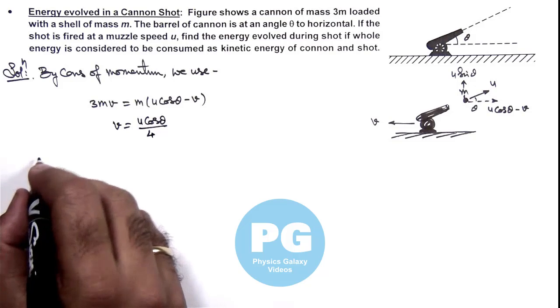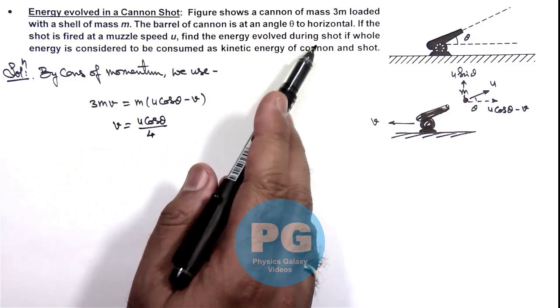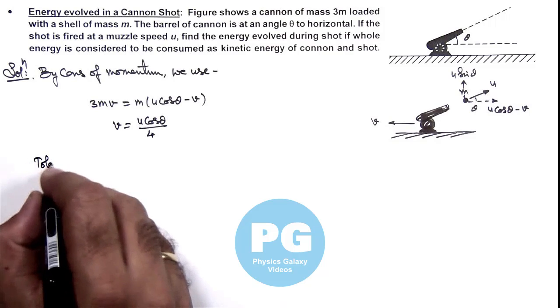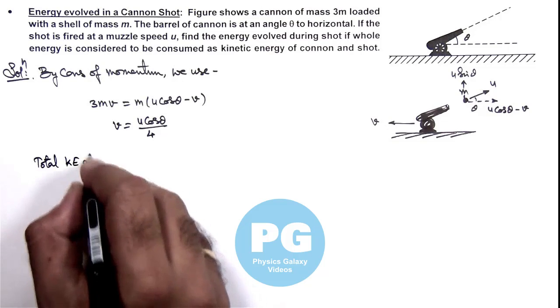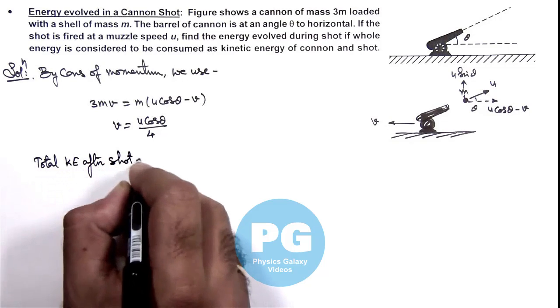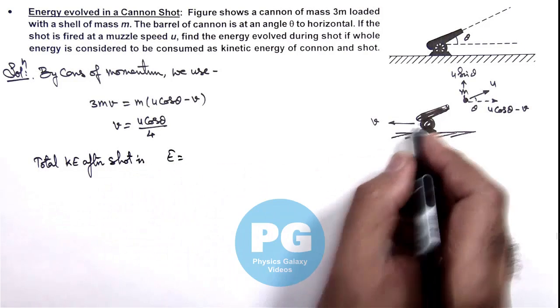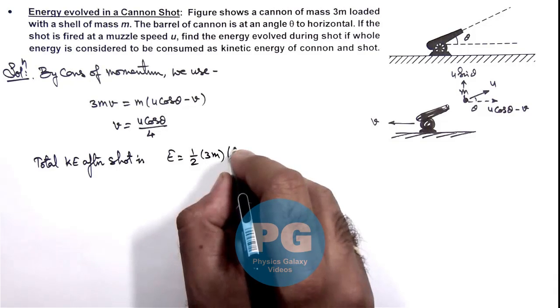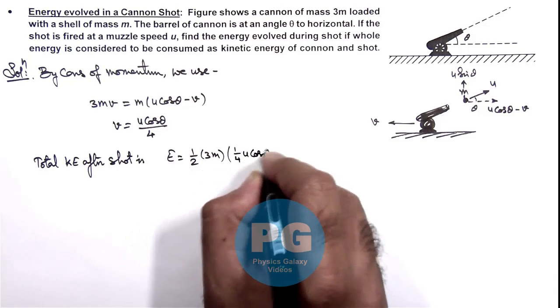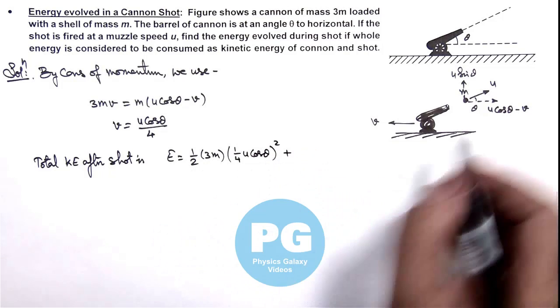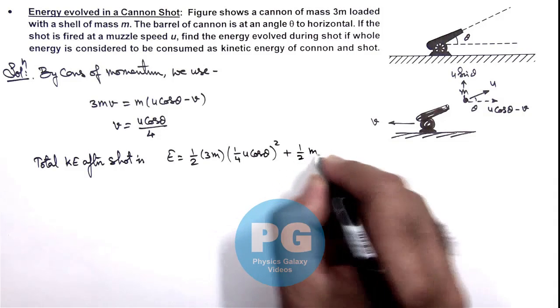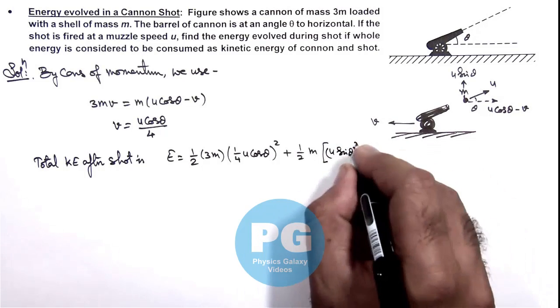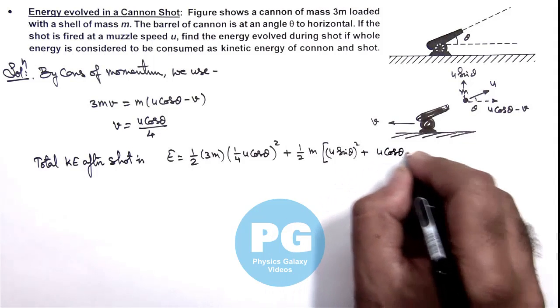Now if we wish to calculate the total energy involved during shot, that will be the total kinetic energy of the system. So we can write total kinetic energy after shot is this energy E. We can write for cannon it is half 3m multiplied by 1 by 4 u cos theta whole square, plus the shell kinetic energy.